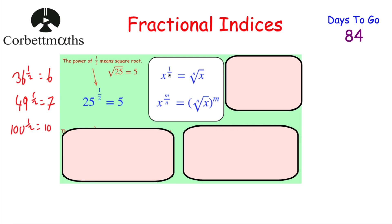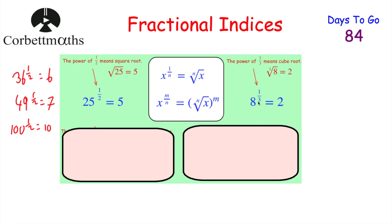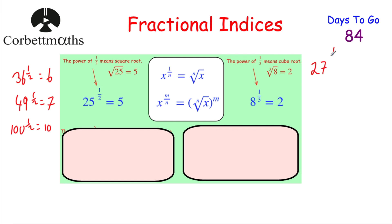For x to the power of 1/3, take the cube root. So 8 to the power of 1/3 = ∛8 = 2. 27 to the power of 1/3 = ∛27 = 3. 125 to the power of 1/3 = ∛125 = 5. In general, if the power is 1/n, you take the nth root. For x to the power of 1/4, take the fourth root, and so on.